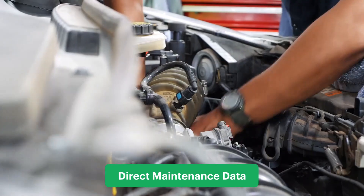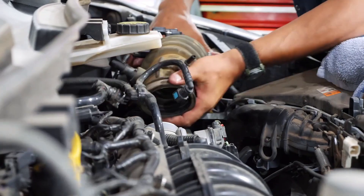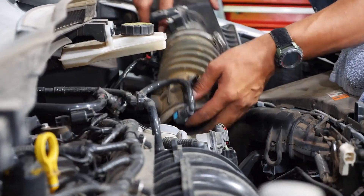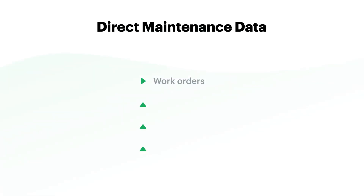You can find direct maintenance data from sources that track what's actually being done to a vehicle, including work orders, invoices, PM schedules, and service histories.